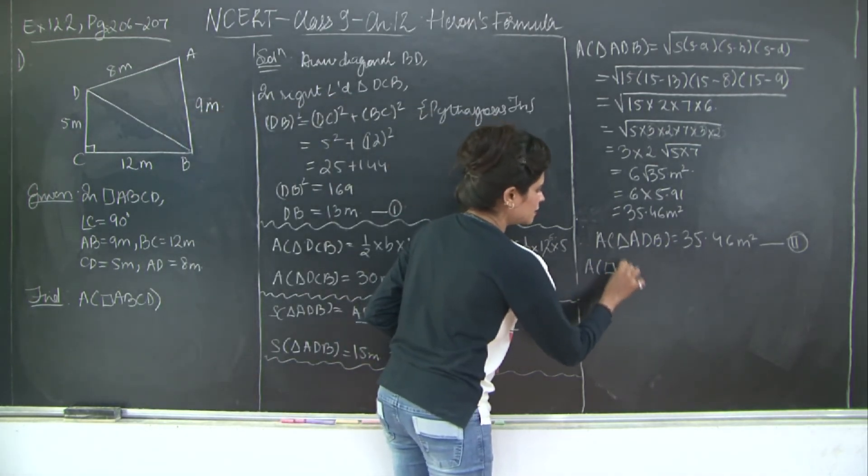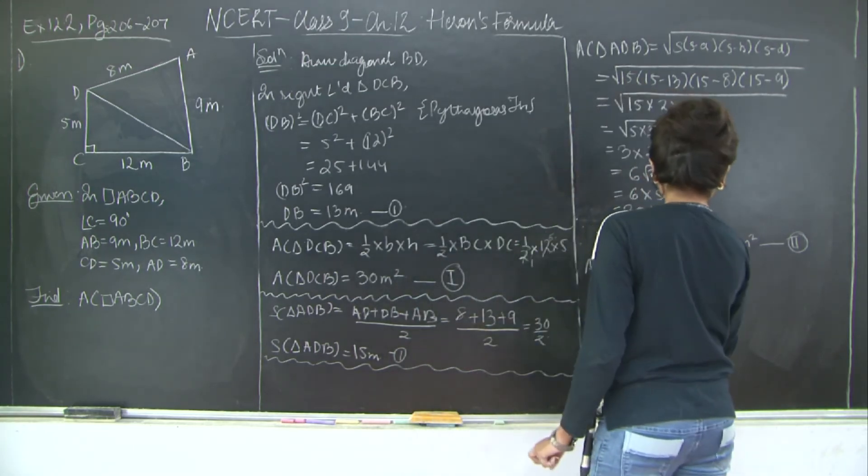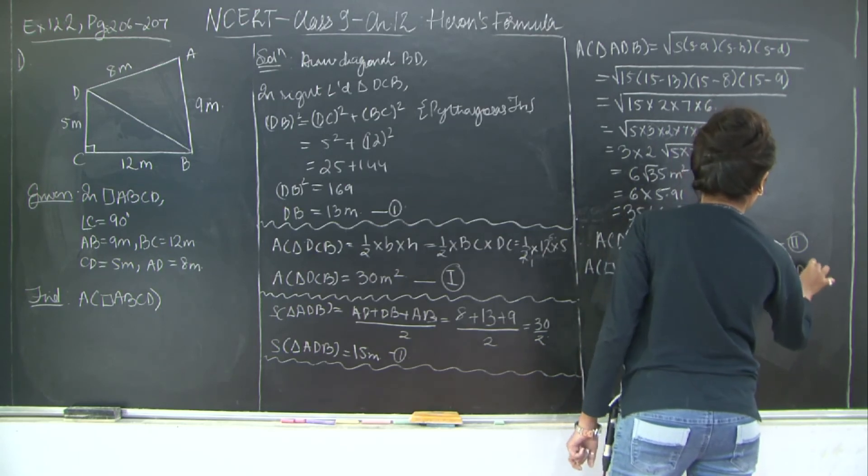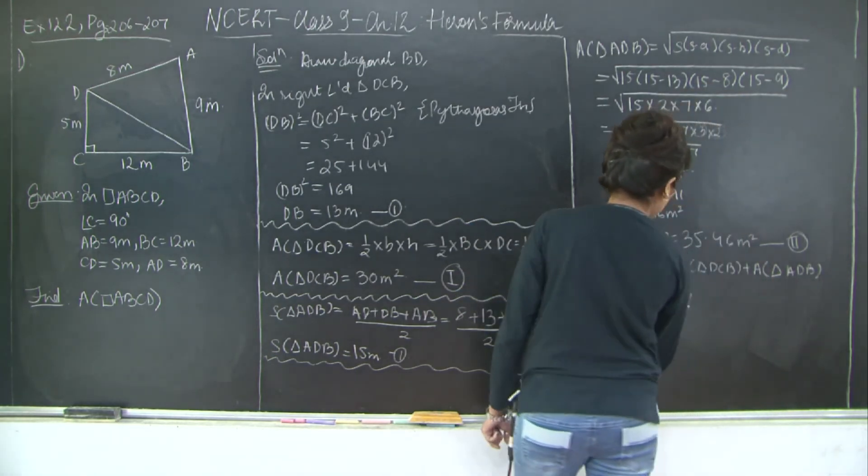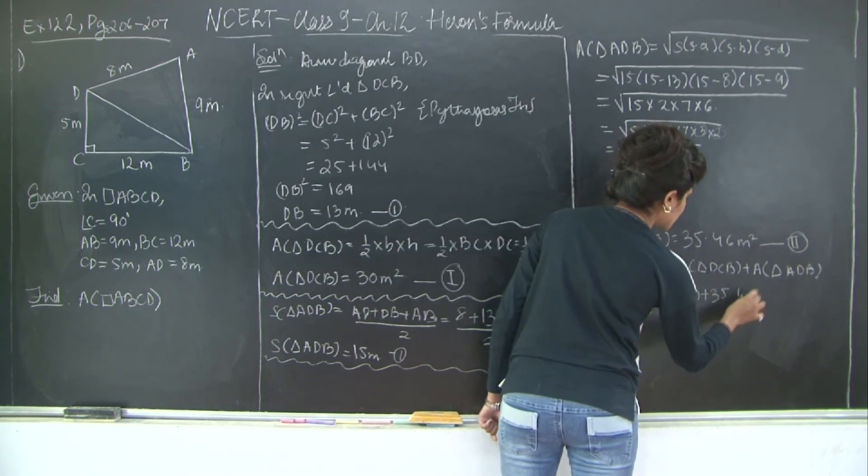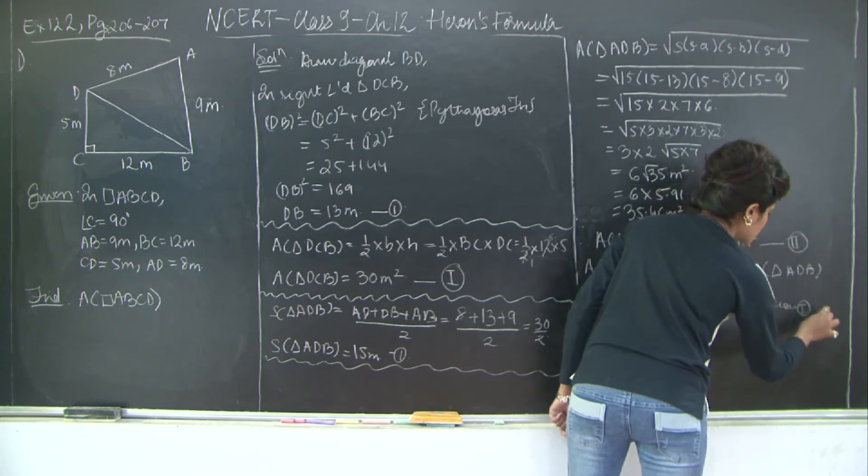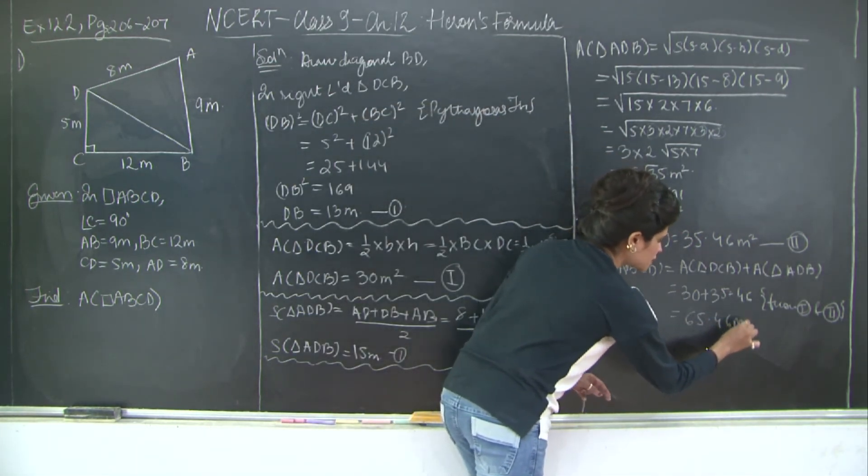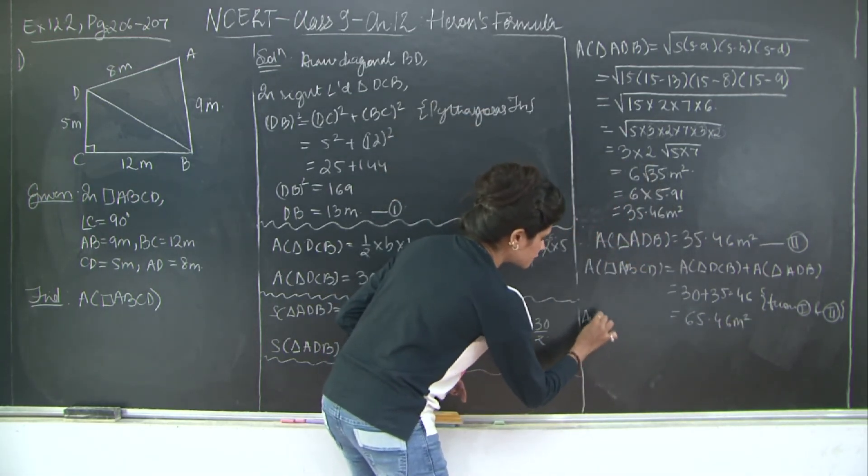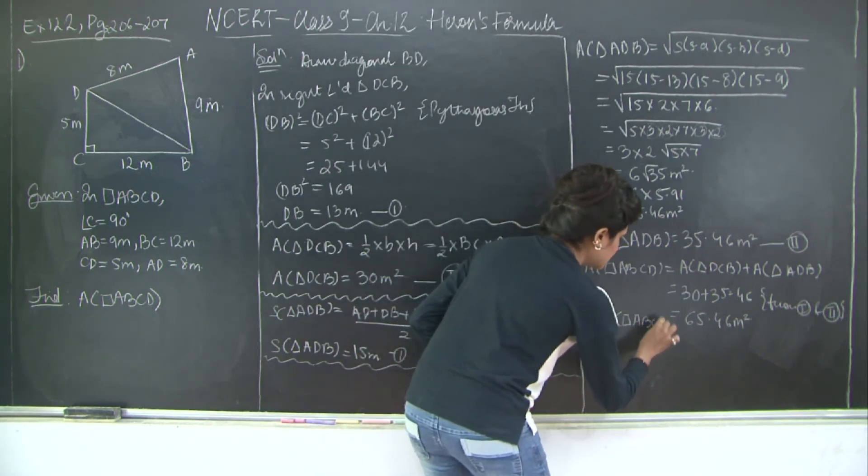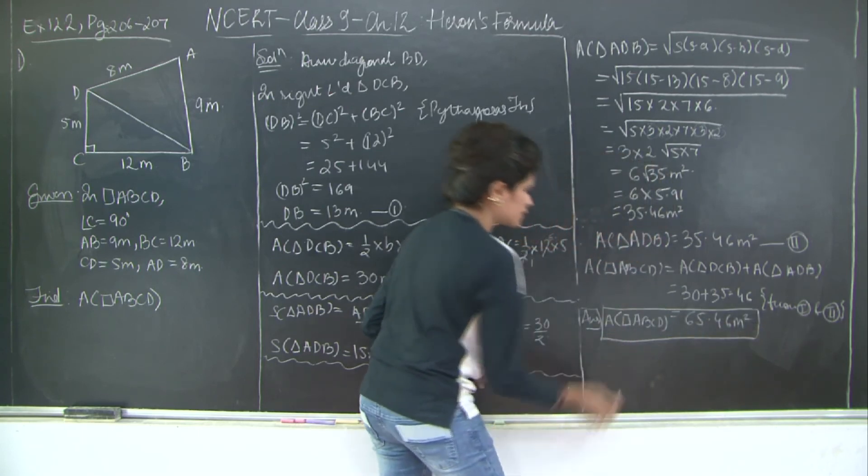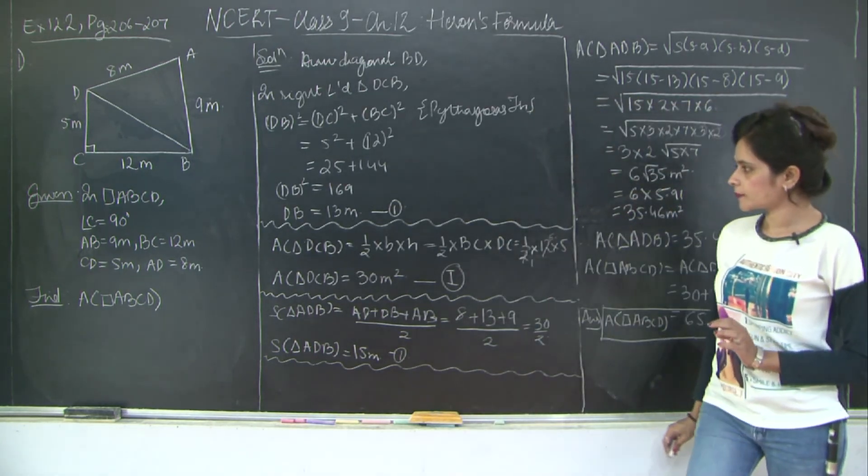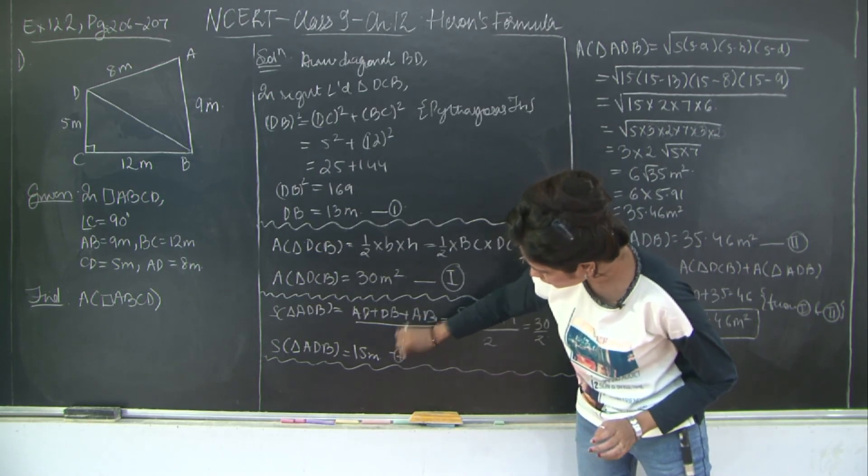So area of quadrilateral ABCD is equal to area of triangle DCB plus area of triangle ADB. So area of your triangle DCB was 30 meter square. So 30 + 35.46 from Roman numbers 1 and 2. Adding these up what do I get? 65.46 meter square. This is going to be your answer. Area of quadrilateral ABCD is 65.46 meter square. So please take a look at the solution.